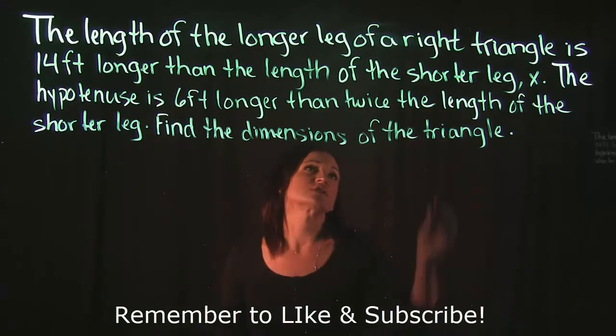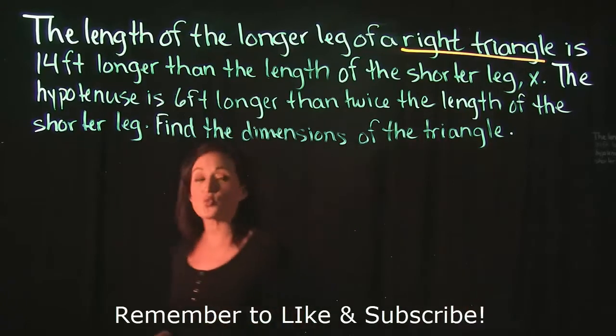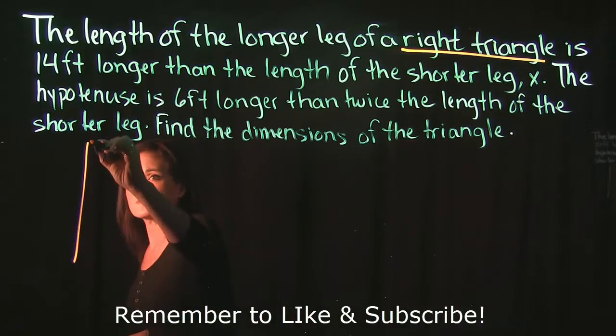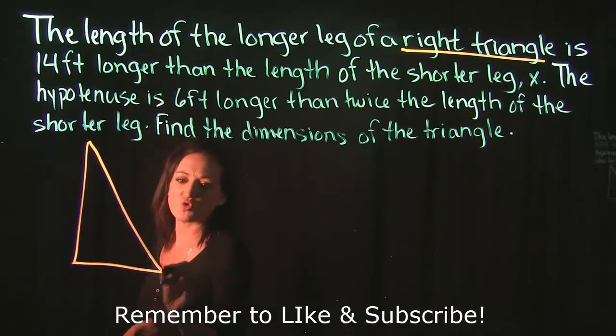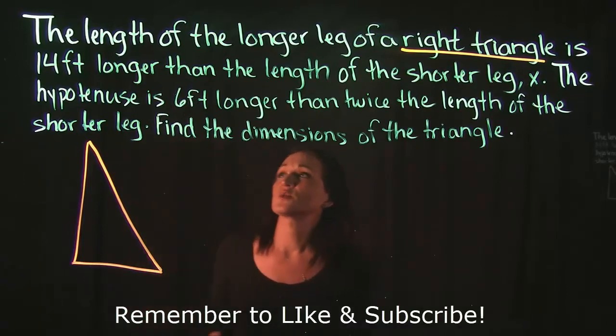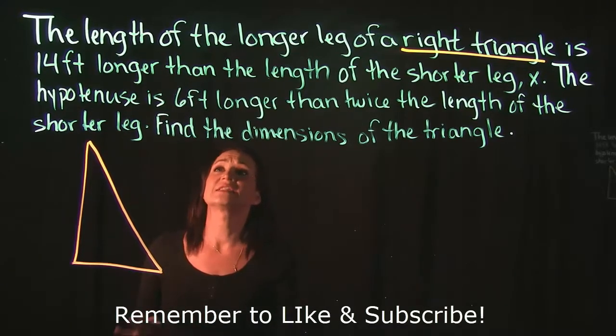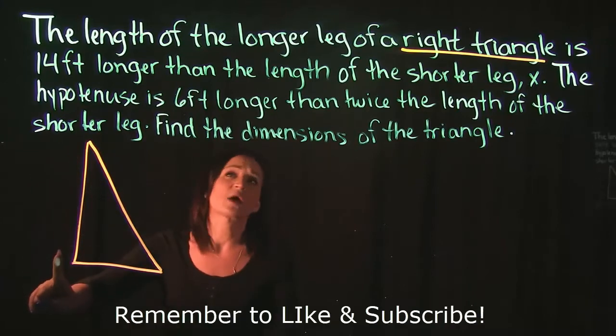Okay, so first things first. I noticed that we're talking about a right triangle. So let's get ourselves a picture here and draw out what's happening. So we have a right triangle and it says the length of the longer leg which is this side right over here